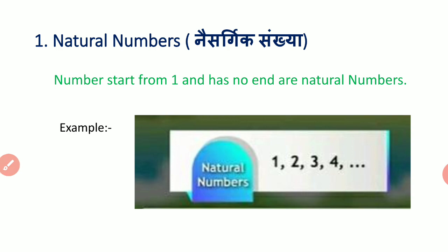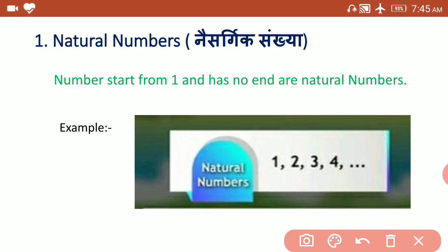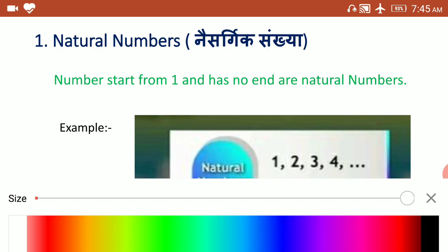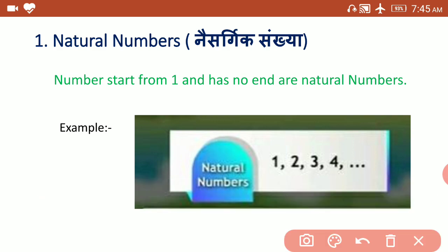Let us learn what we have studied in the previous standard. We know the numbers and types of numbers. The first type is Natural Numbers. Natural Numbers start from 1 and have no end. Examples of Natural Numbers are 1, 2, 3, 4, 5, 6, 7, 8 and so on.